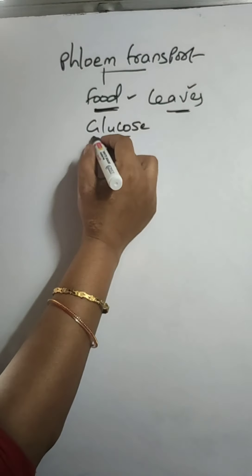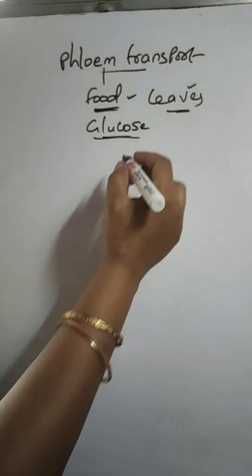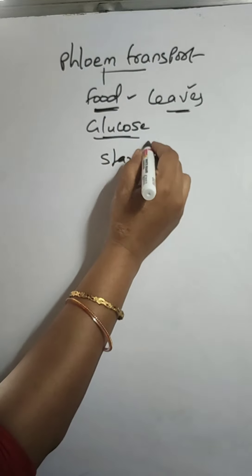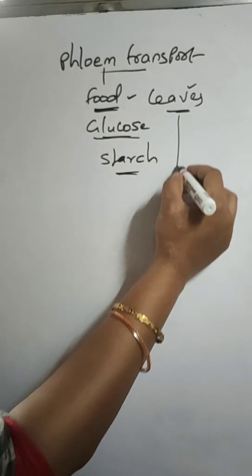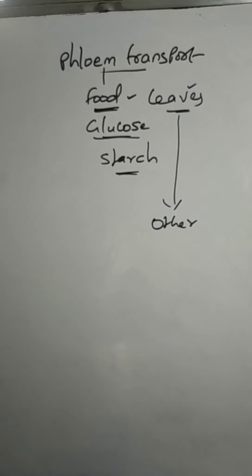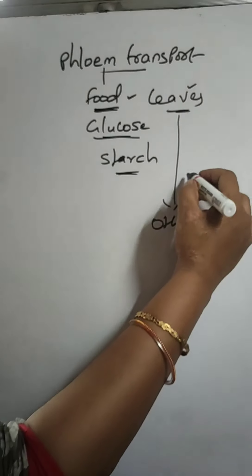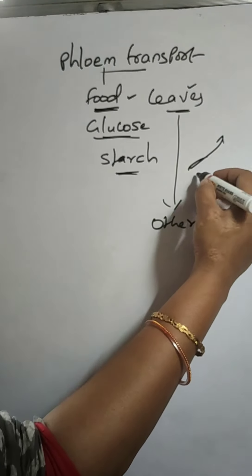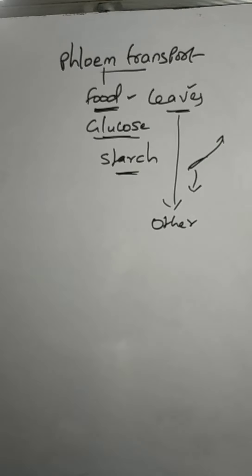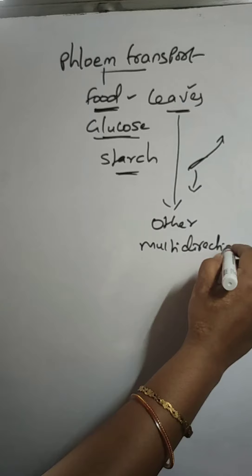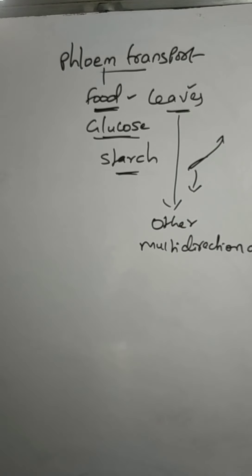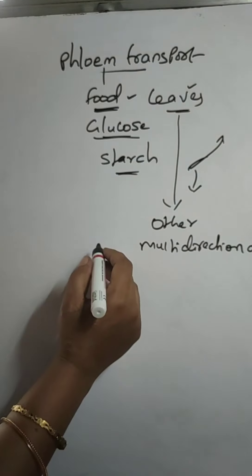The food materials synthesized — yes, glucose — will be stored in the form of starch. This phloem will transport from the leaves to the other regions of the plant, such as roots, fruits, or flowers. Whether the movement is upward or downward, it will show. So it is a multi-directional transportation.